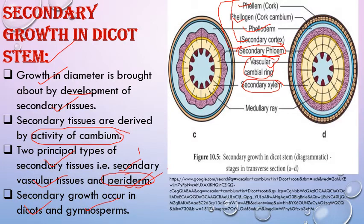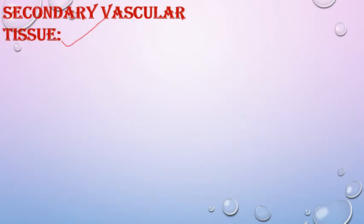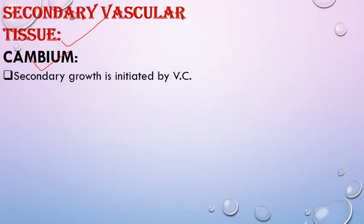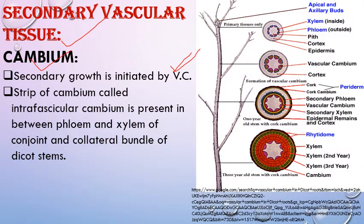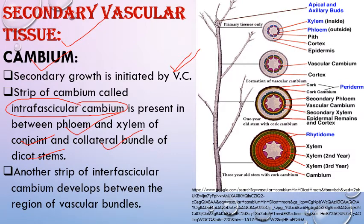Secondary vascular tissue begins with vascular cambium. The strip of cambium present between xylem and phloem is called intrafascicular cambium, which is already present. The vascular bundles in dicots are conjoint collateral — this is a characteristic feature of dicot stem. Another strip present between two vascular bundles is called interfascicular cambium, found by de-differentiation of parenchyma cells present between the two vascular bundles.